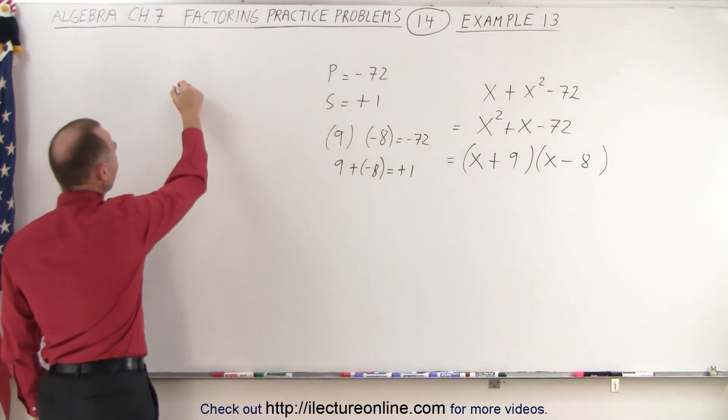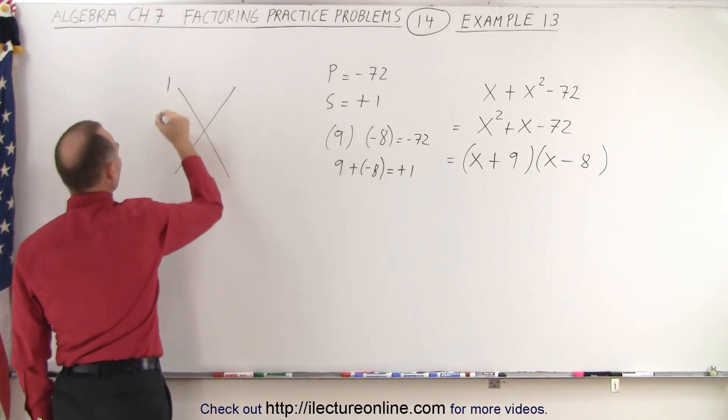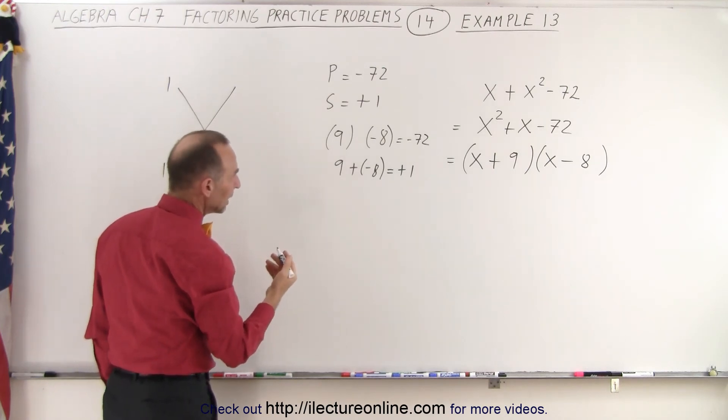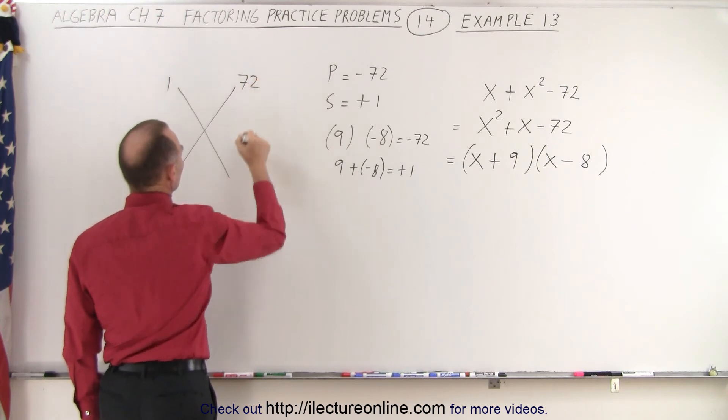If we use the FOIL method on the left side to get x squared, of course, I need a 1 and a 1. On the right side, I'm going to need two numbers. When I multiply, I get 72. So for example, 72 and 1, or 36 and 2,